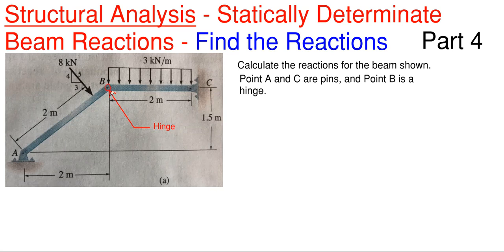Think of a hinge in a frame or a beam like this as a door hinge. It allows the door to swing — thus rotate — but it does not allow the door to move vertically, up and down, or left and right translationally.